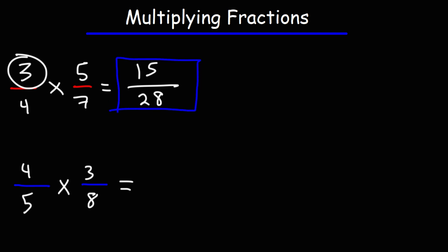Now what about the next one? What is 4 over 5 times 3 over 8? To multiply these two fractions we're going to do the same thing. We're going to multiply the numerators. 4 times 3 is 12 and then we're going to multiply the values in the bottom. 5 times 8 is 40.